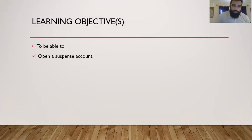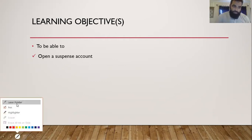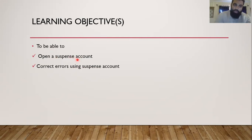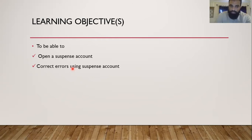The learning objectives for today are: first, we must be able to open a suspense account. Opening a suspense account means two things — finding out the balance, and deciding which side of the suspense account the balance will appear. The second goal is we must be able to correct errors where a suspense account is needed, pass journal entries, and complete the entry in the suspense account, which involves preparation of a complete suspense account.